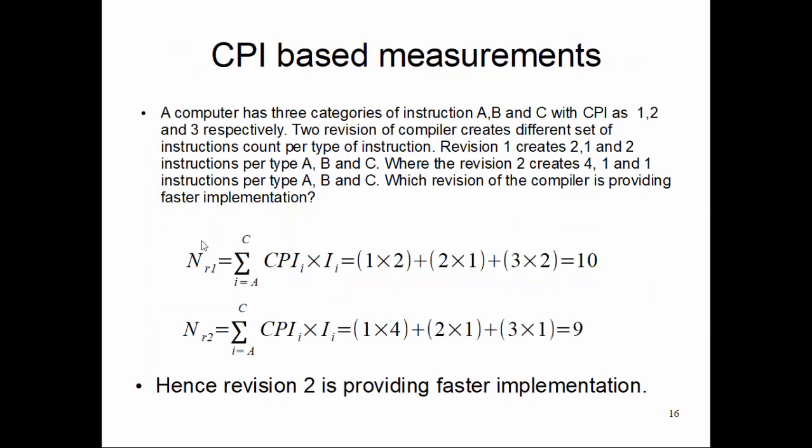Now as a problem, let's take a more complicated example. A computer has three categories of instruction A, B, and C with CPI 1, 2, and 3 respectively. Two revisions of compiler create different sets of instruction counts per type of instruction. Revision 1 creates 2, 1, and 2 instructions per type A, B, and C.